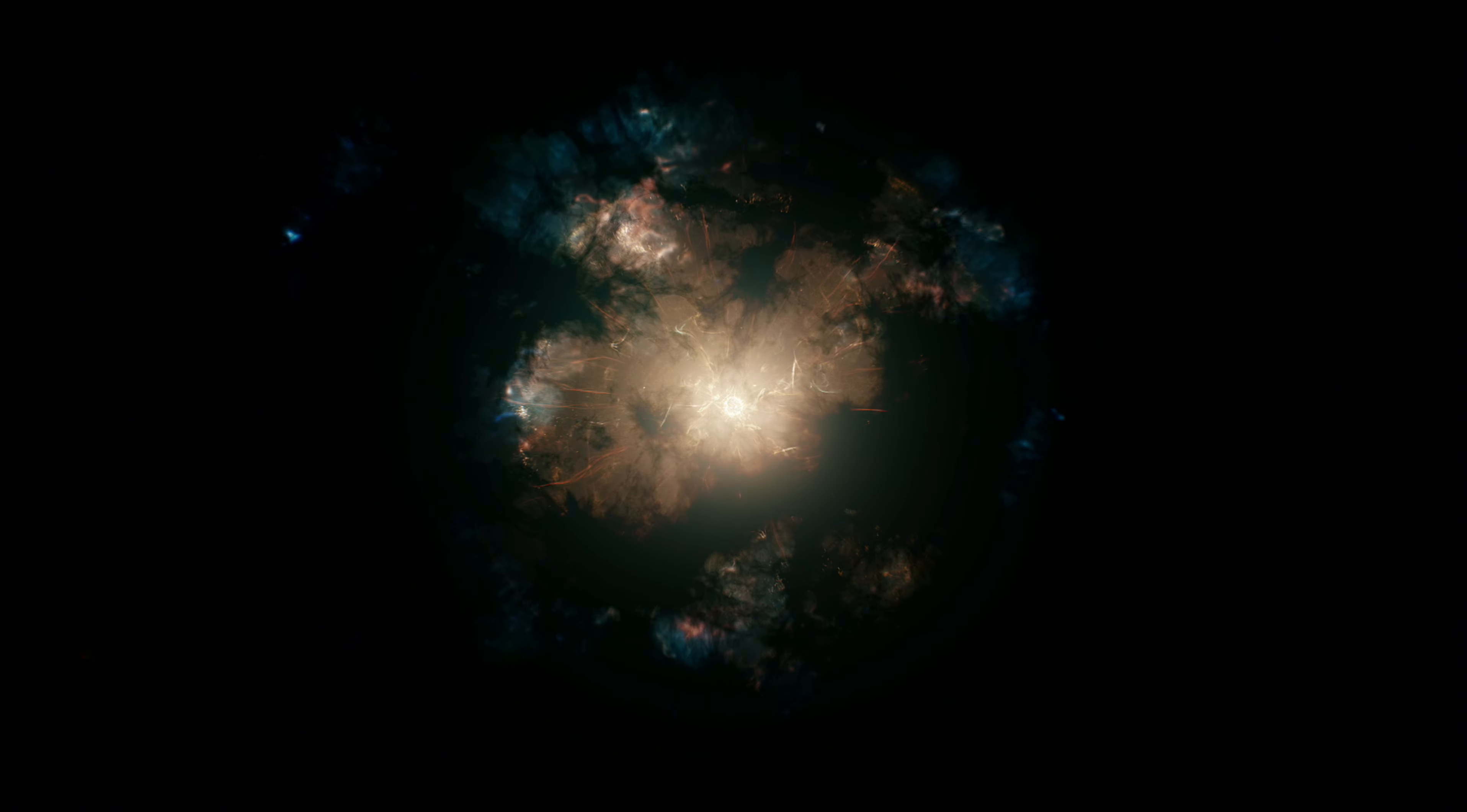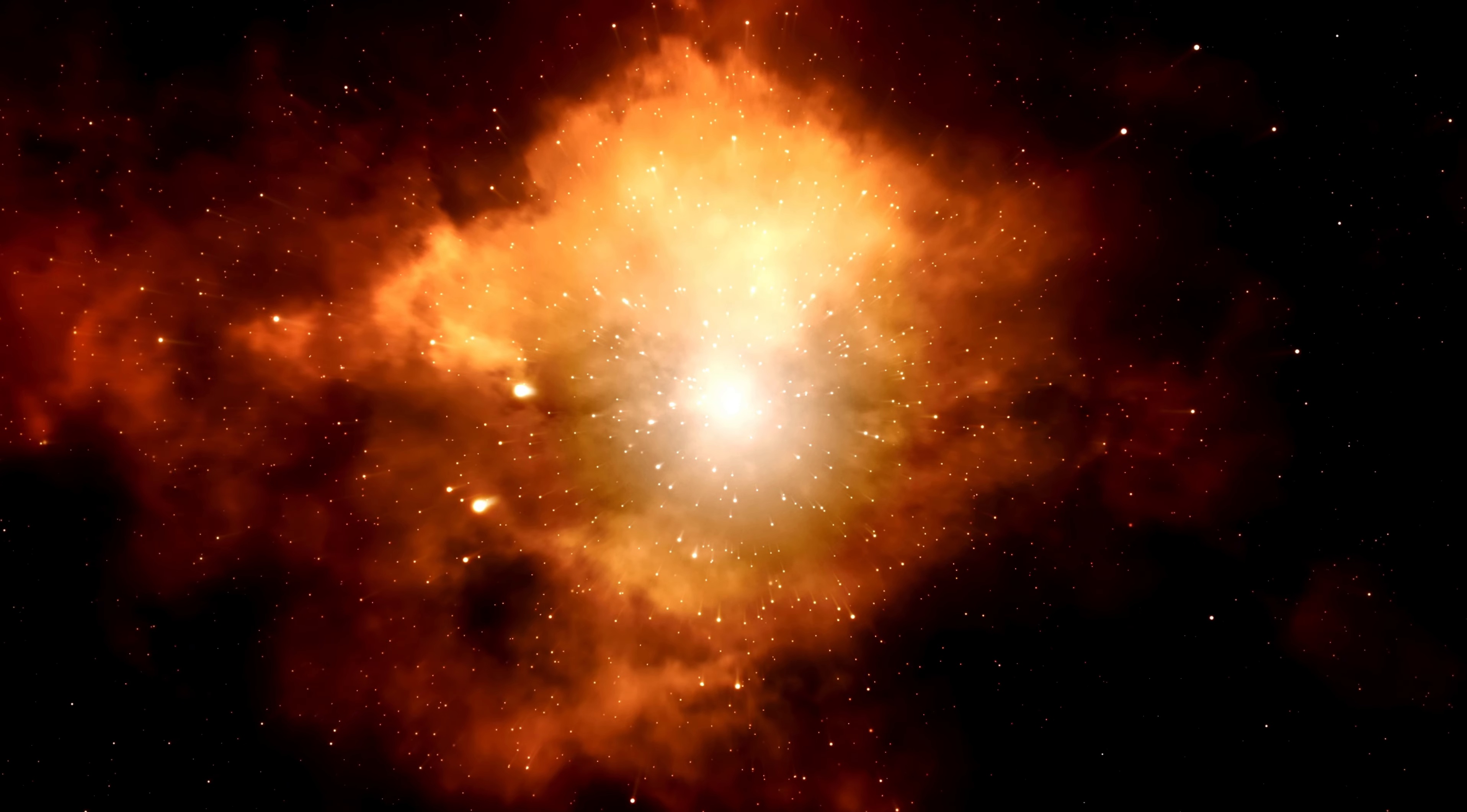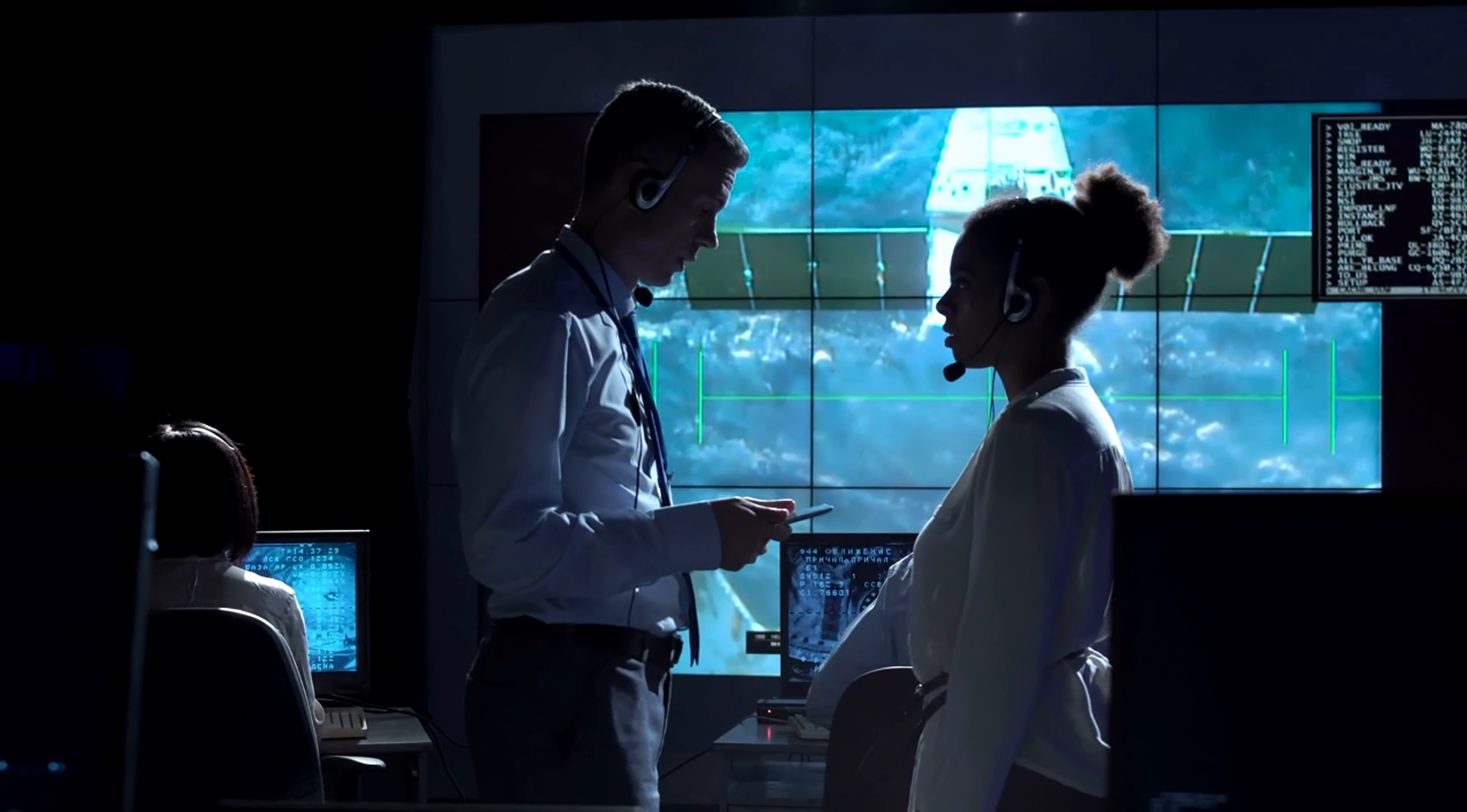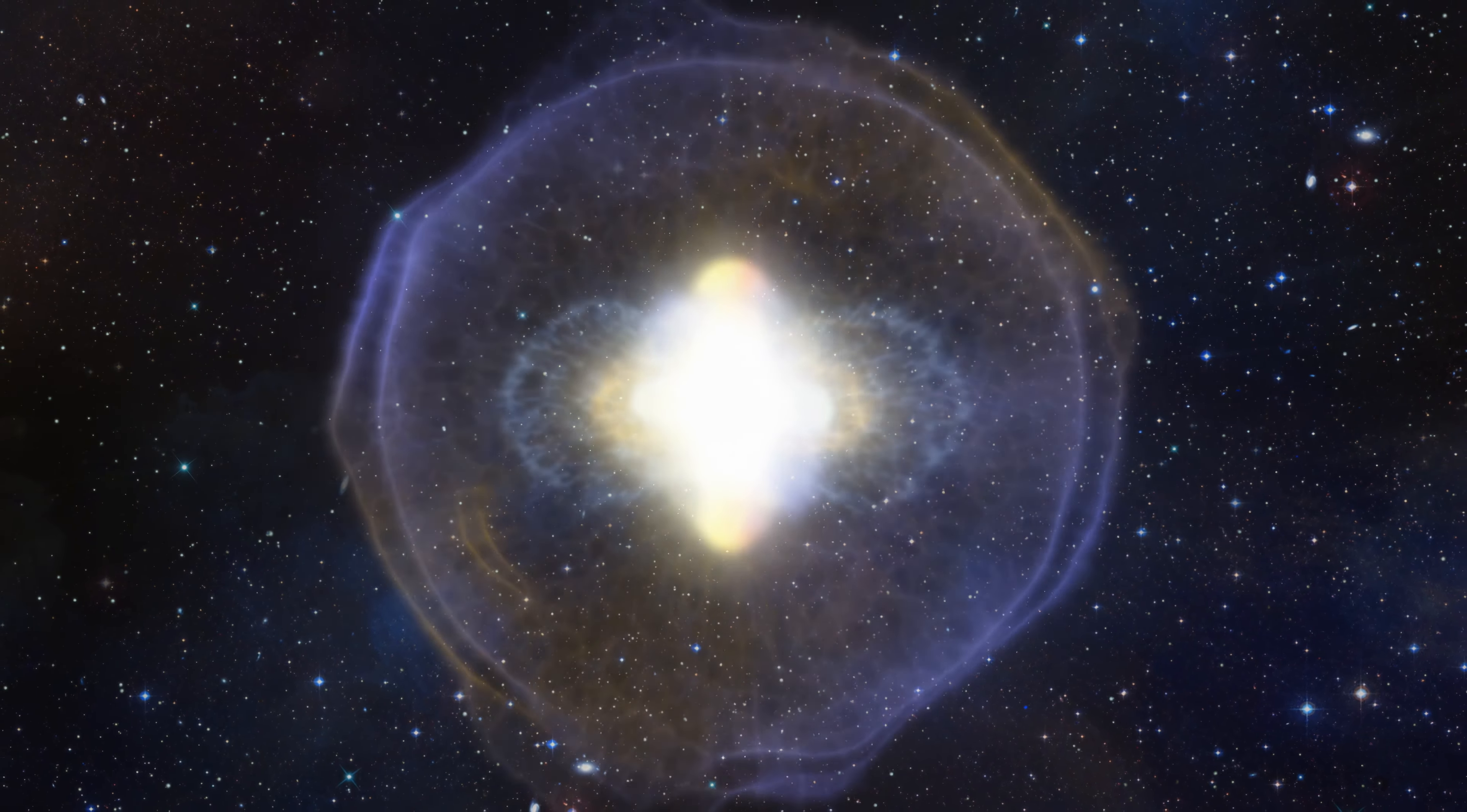Unlike our Sun, Betelgeuse is a massive star with a much shorter lifespan. It's certain that Betelgeuse will eventually undergo a supernova, transforming into either a neutron star or a black hole, depending on the material left behind after the explosion. However, many astrophysicists cautioned against immediately attributing the dimming of Betelgeuse to a supernova event. They suggested more ordinary phenomena, such as convective cell activity or the presence of a dust cloud, could be responsible.